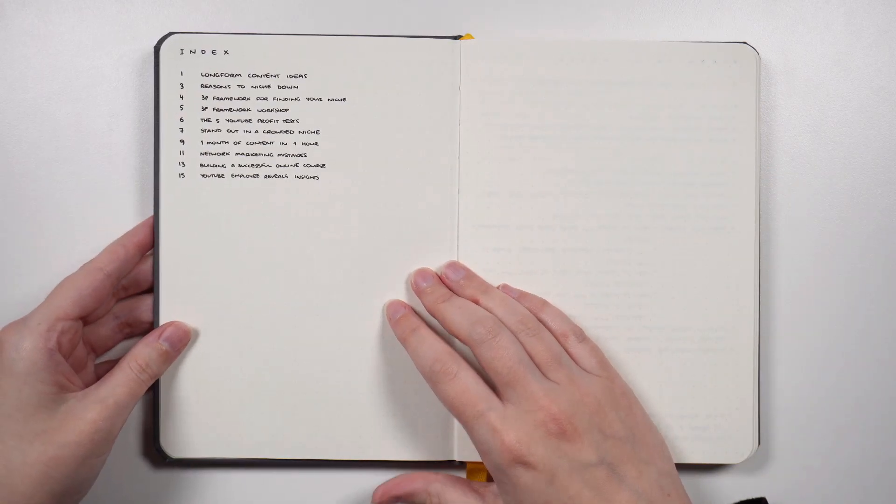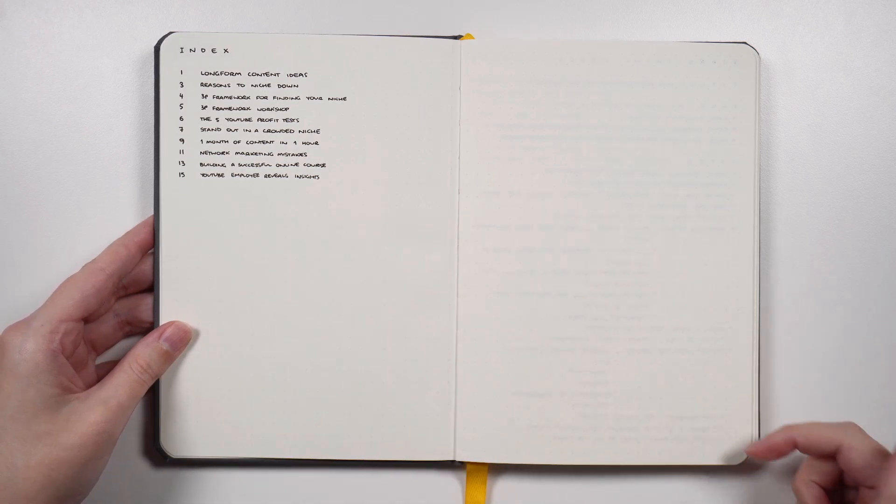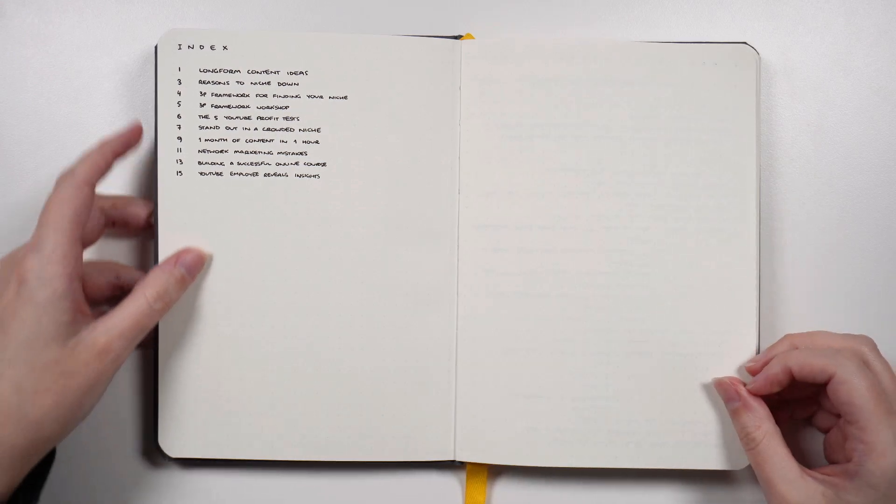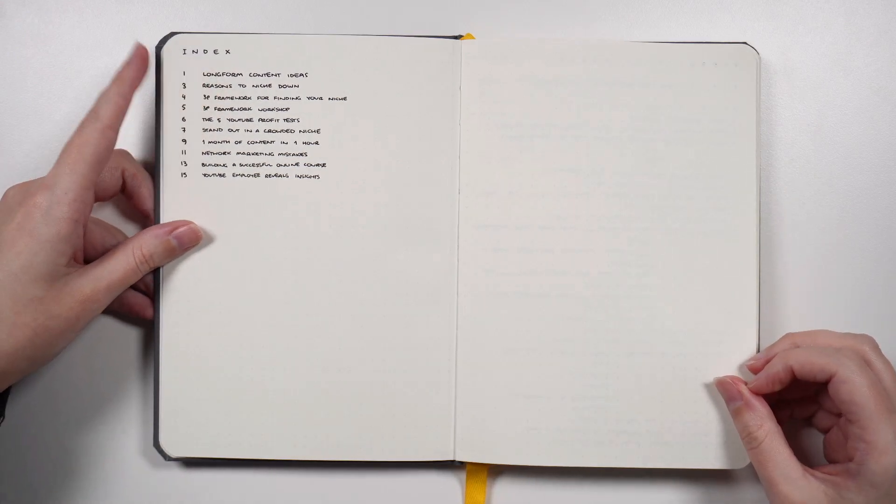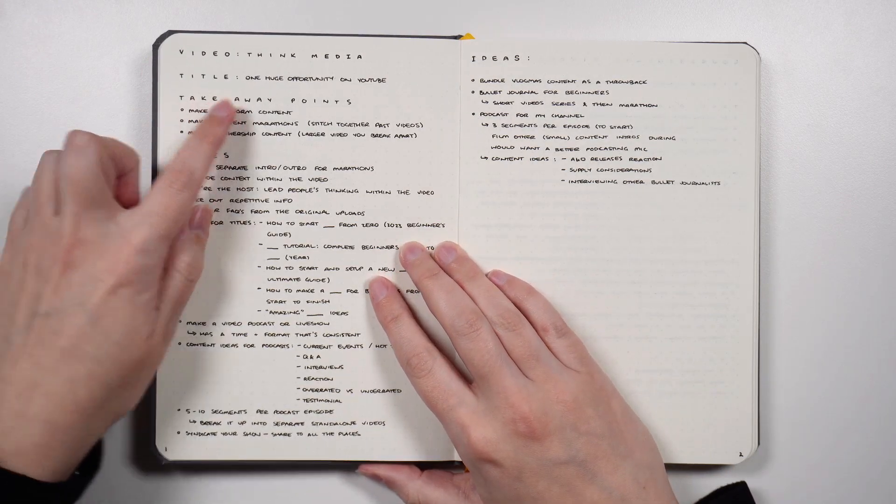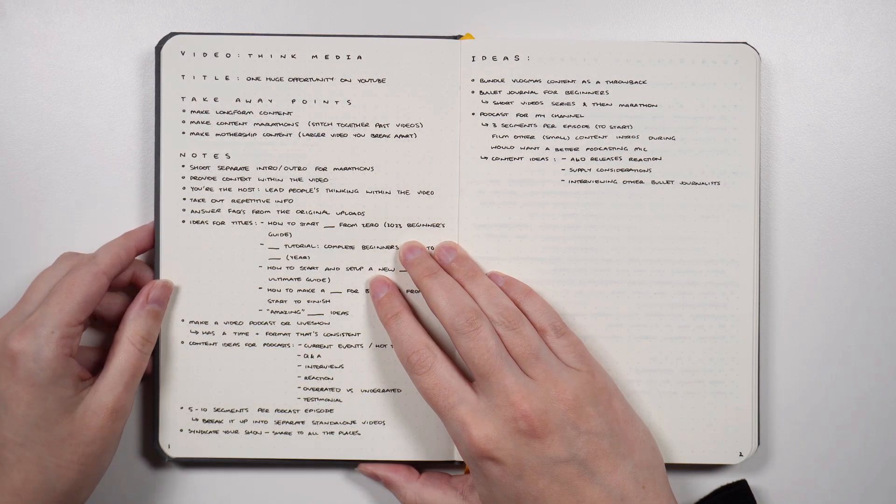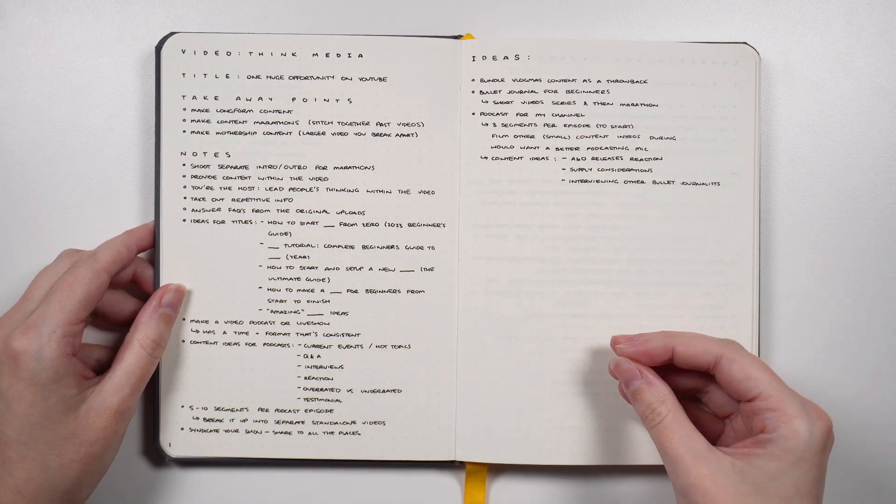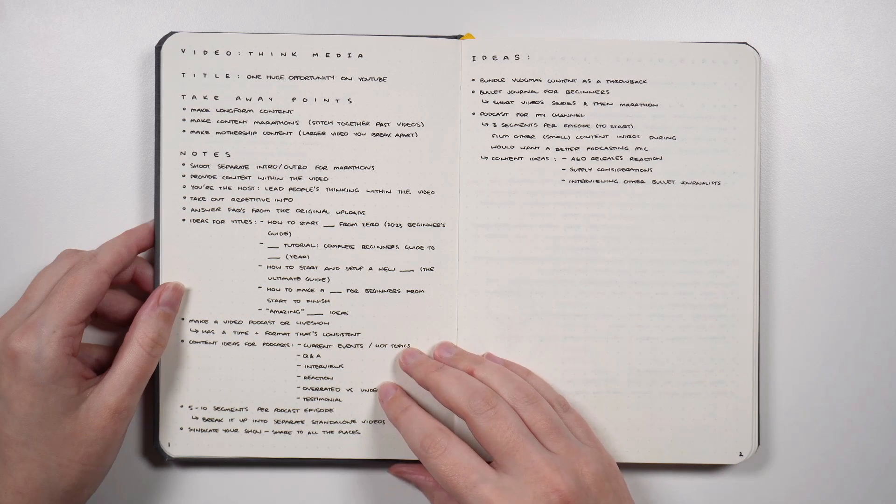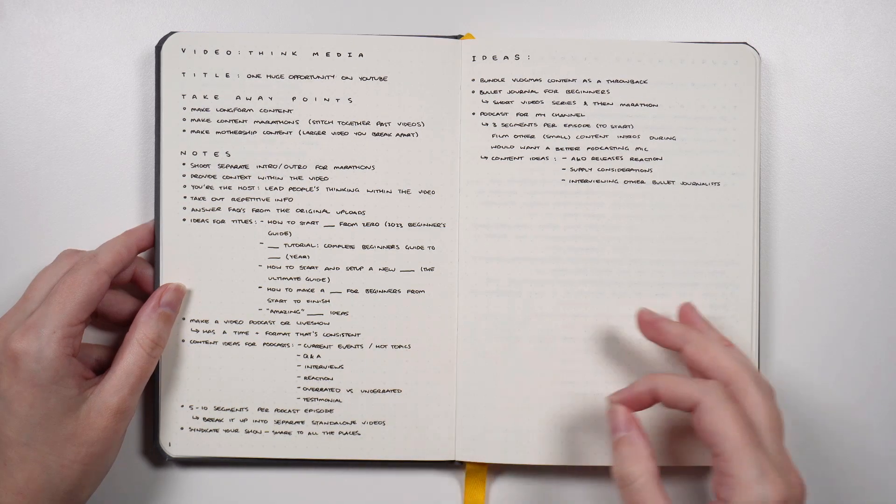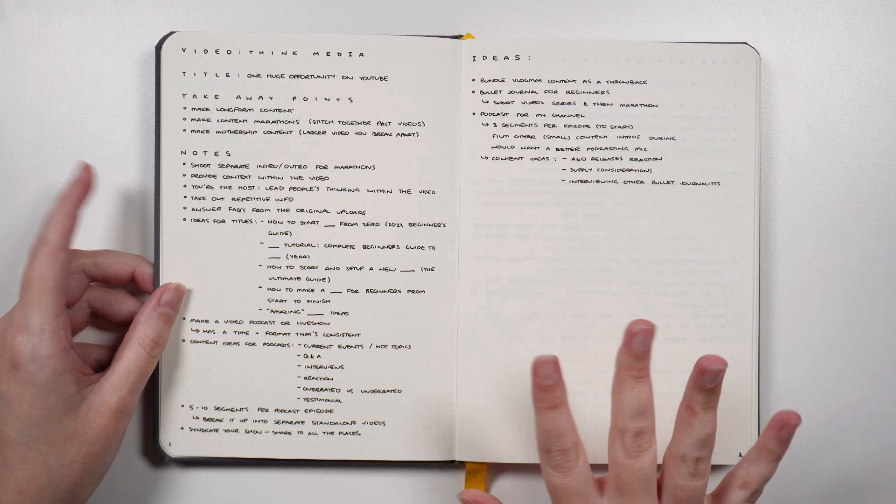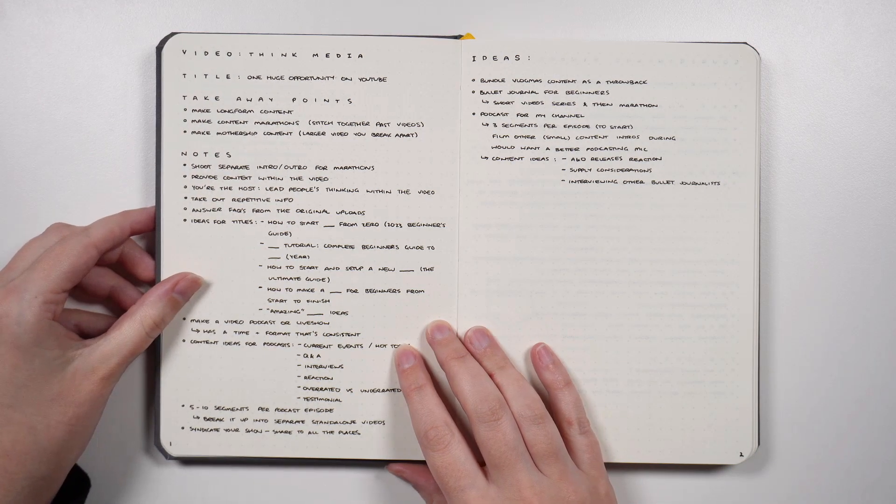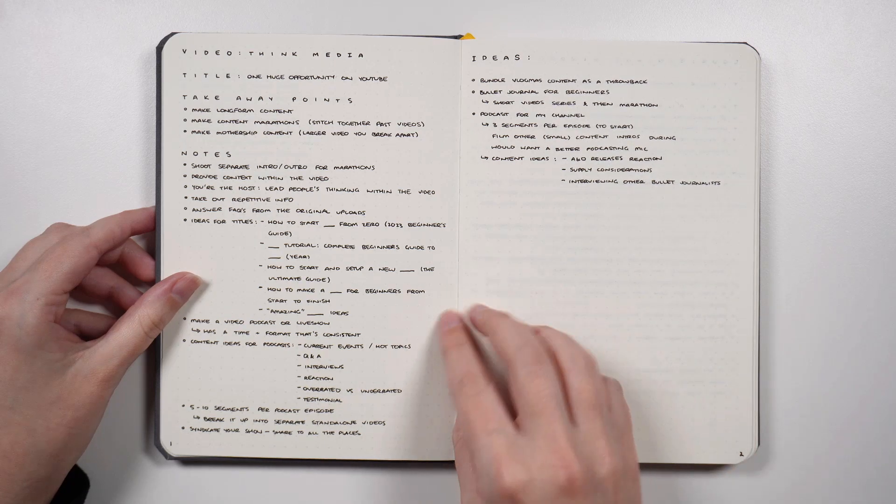We have the index which is going to go across both of these pages, and because there are no page numbers I do number the pages as I go. For example, on the first page here it is long form content ideas, but the actual title was One Huge Opportunity on YouTube. Obviously these videos that I've been watching from Think Media, the titles are done to kind of capture your attention and actually get you into the video. They don't necessarily tell you exactly what the video is about. It gives a little bit of intrigue. But for this one, even though it was a video, I did write my takeaway points first because I actually watched the video before I took my notes down.